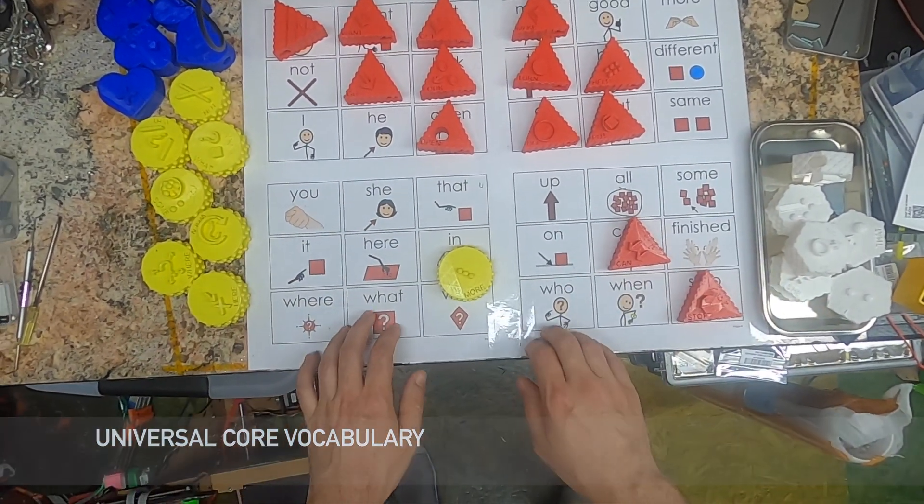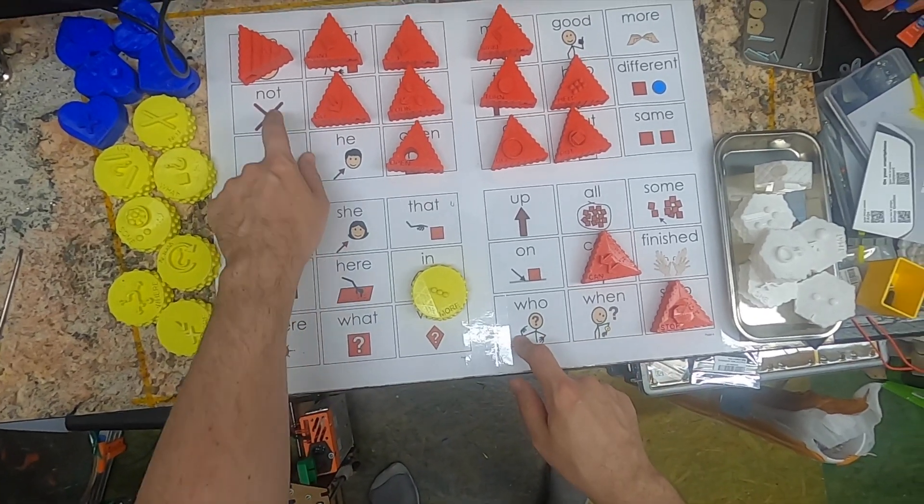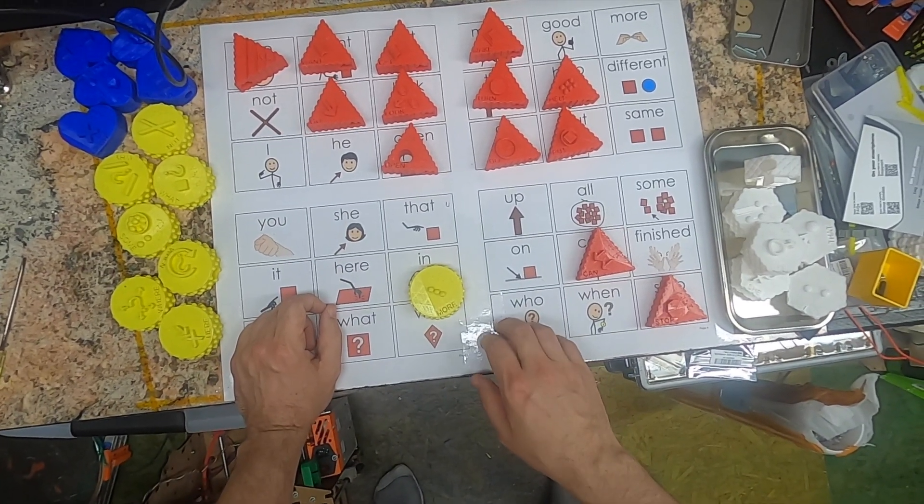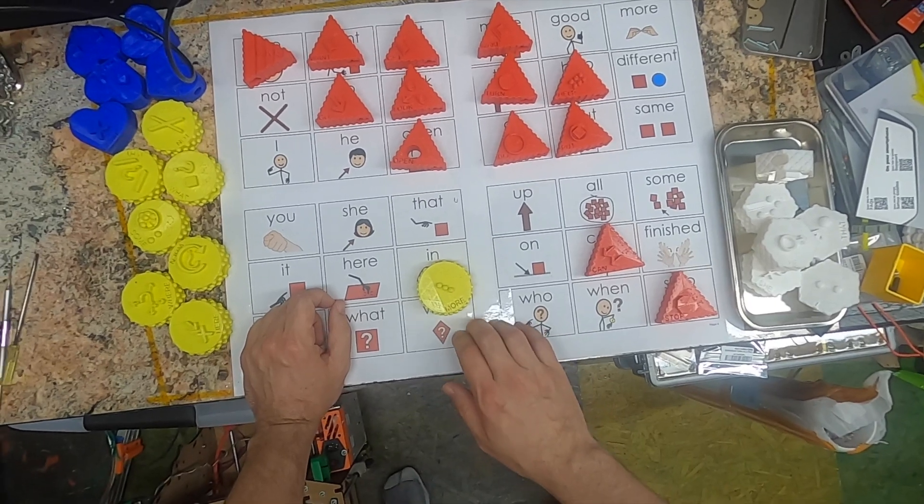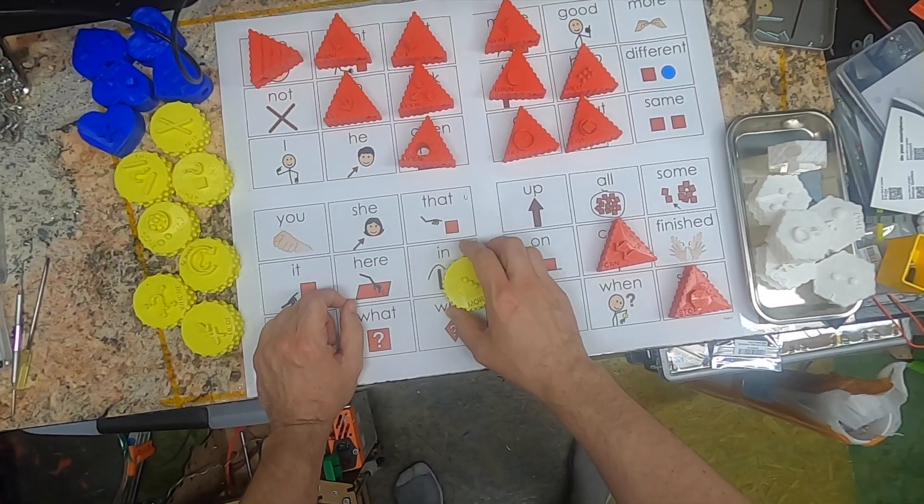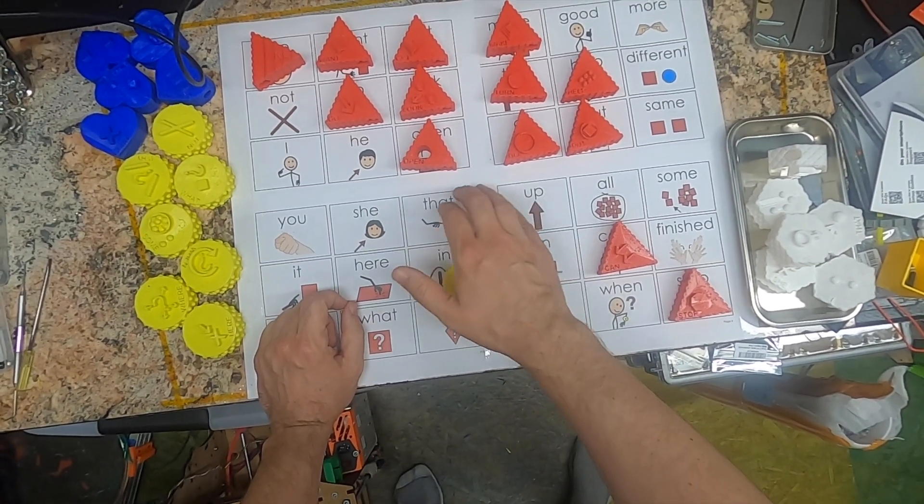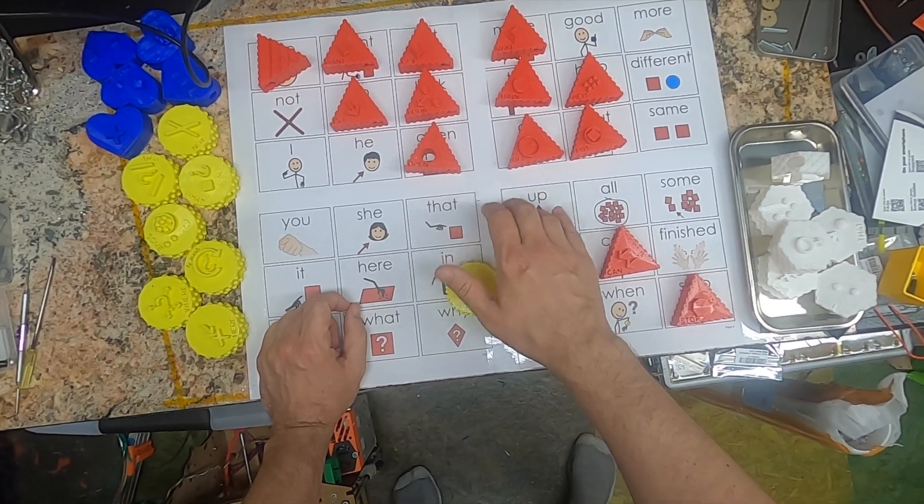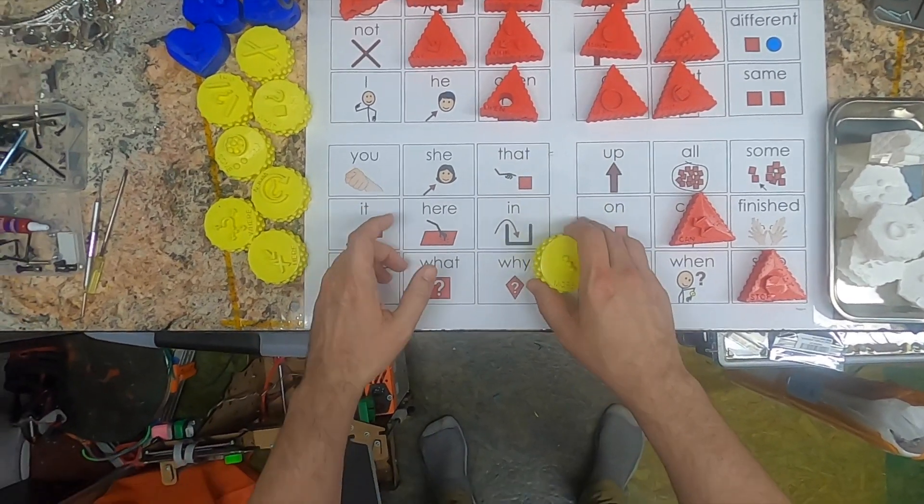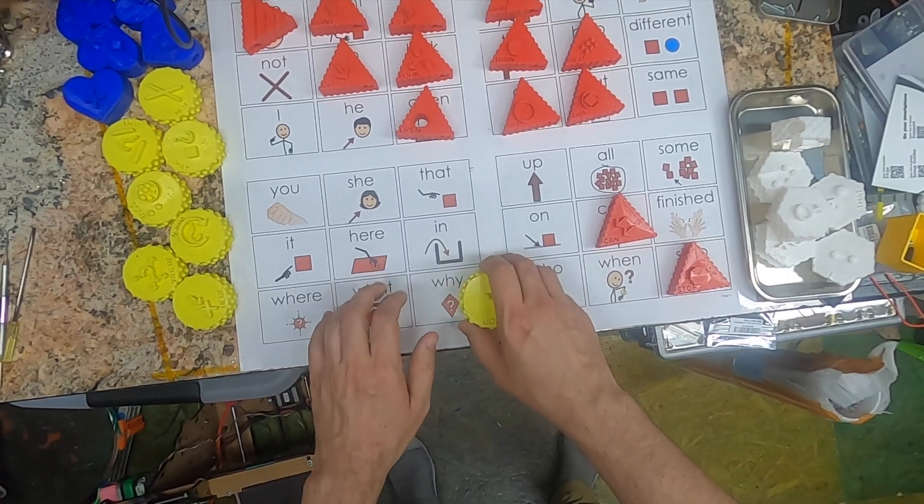On the surface, the Universal Core Vocabulary is a set of 36 words, six by six, which can be used alone or in combination to communicate with people who cannot speak. The vocabulary is not exclusively 3D printed—it's implemented in many electronic devices, as well as communication boards like this one, which was made by SymbolStix. Link to them again.